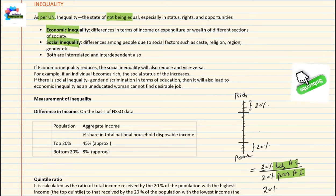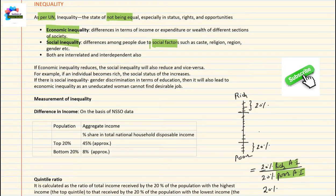Social inequality refers to differences among people due to social factors such as caste, religion, region, gender, etc. In society, there is inequality between high caste and low caste — so-called higher caste people have more access to resources. Similarly, if a person from a particular religion is not allowed to stay in a particular home or denied a job because of their religion, that also creates inequality.